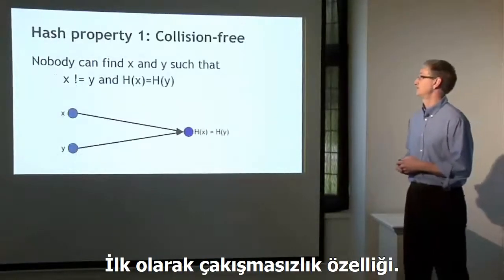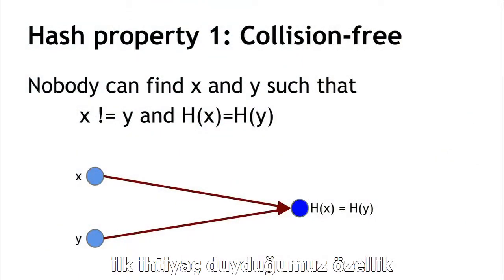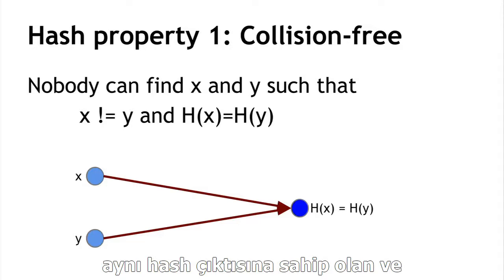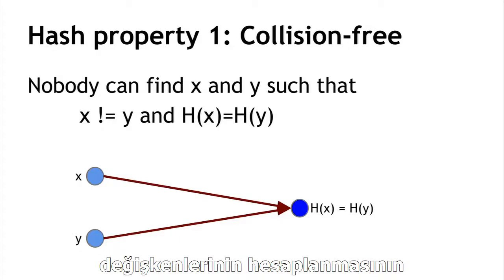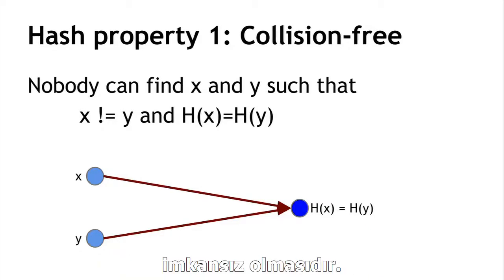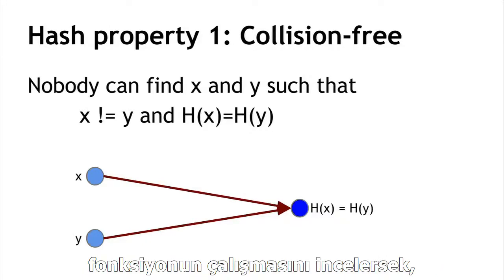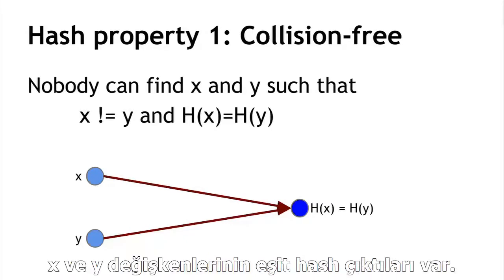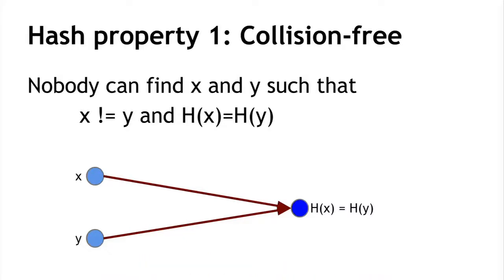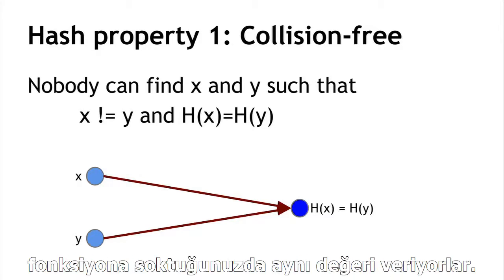The first property we need from a cryptographic hash function is that it's collision-free. What that means is that it's impossible — nobody can find values x and y such that x and y are different, and yet the hash of x is equal to the hash of y. Nobody can find a situation where you have an x and y that are separate, and yet when you hash them, they hash to the same value.